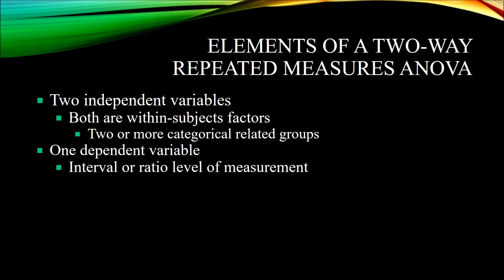Looking at the elements of a two-way repeated measures ANOVA: you have two independent variables, and both are within-subjects factors. For each within-subjects factor, you have two or more categorical related groups. In the example I've been using, there are just two categorical related groups for each within-subjects factor. However, you can have more than two levels. For example, for the within-subjects factor light, you could have bright, normally lighted, and dark — three levels of that variable.